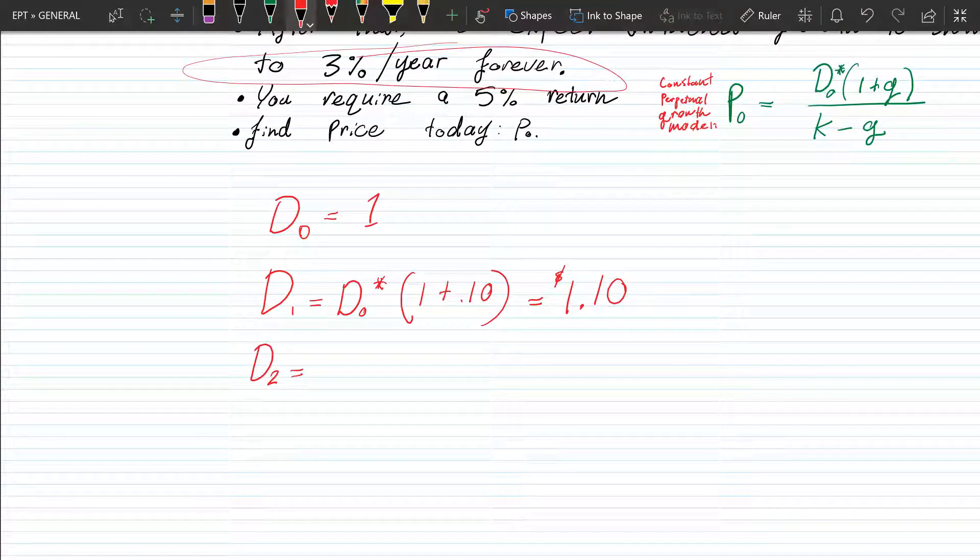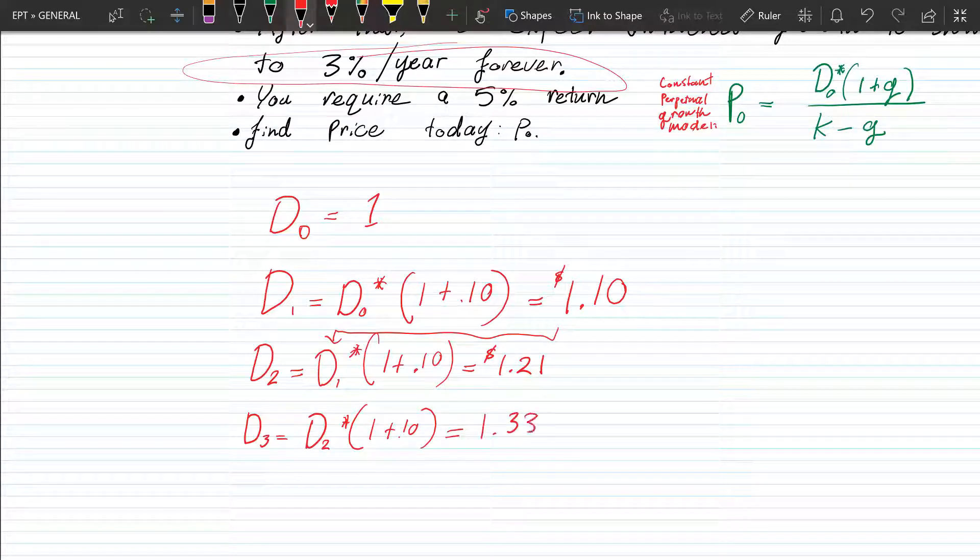Okay, that's easy enough. Now D2, it's going to be D1 times 1 plus 10%. And D1 is just $1.10, so we know, let's see, $1.10 times 1.1, it's going to be 1.21 for dividend 2. And then we have dividend 3. Finally, we have that 1.21 times 1.1, and that's going to give us 1.331.